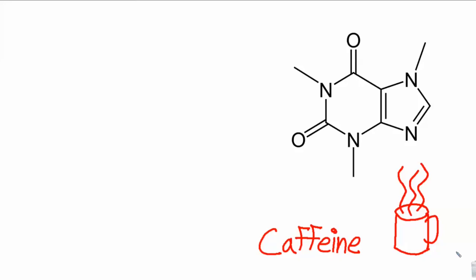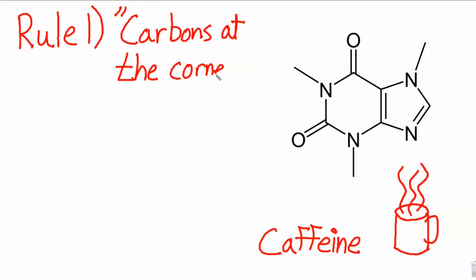This drawing is a shorthand depiction of the chemical structure. Chemists and biologists love using this type of shorthand, but it takes a little practice to get used to it. There's a couple of rules you have to follow. Rule one is what I like to call carbons at the corners. What do I mean by that?